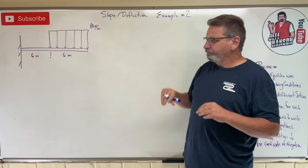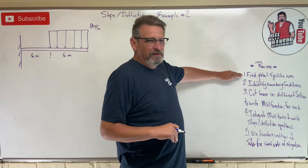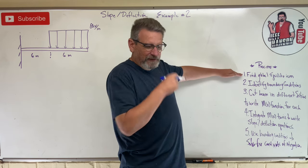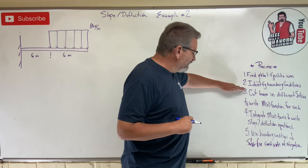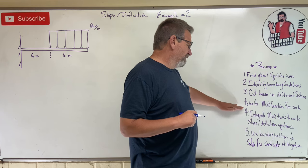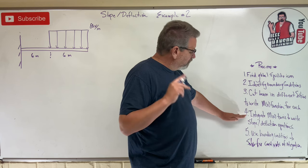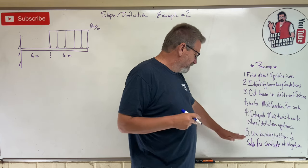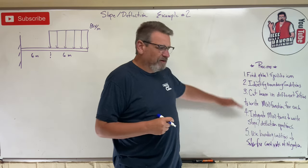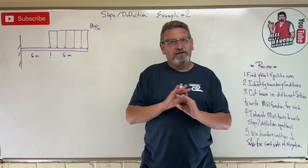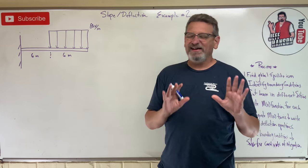Here's a recipe we derived in the last video. First, find equilibrium. Then identify your boundary conditions. Cut the beam in different sections to write the moment function for each section. Then integrate the moment function one time for slope, two times for deflection. Finally, use your boundary conditions to plug back in and find those constants of integration.